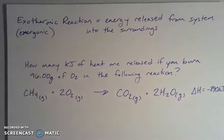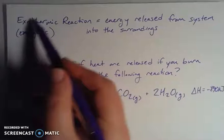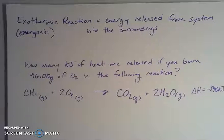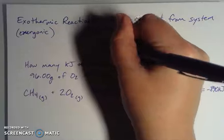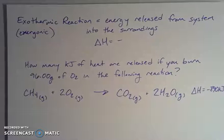That's endothermic. Now let's look at an exothermic example. Exothermic reactions are the opposite — energy is released from the system out into the surroundings. This is also called an exergonic reaction. I like the 'therm' part — 'exo' means coming out. That would give me a negative delta H. I would know it's an exothermic reaction when I calculate or see a negative delta H.